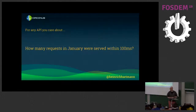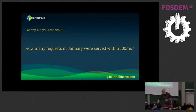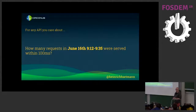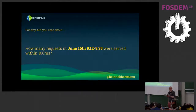You're monitoring it, so how would you actually do it? Can you answer this question already? What about 150 milliseconds? What about maybe 180 milliseconds? What about if you had a problem on June 16, 2018 between 9:12 and 9:35 — how many requests were served within 100 milliseconds? I guess — who can actually answer that question for any of their APIs?